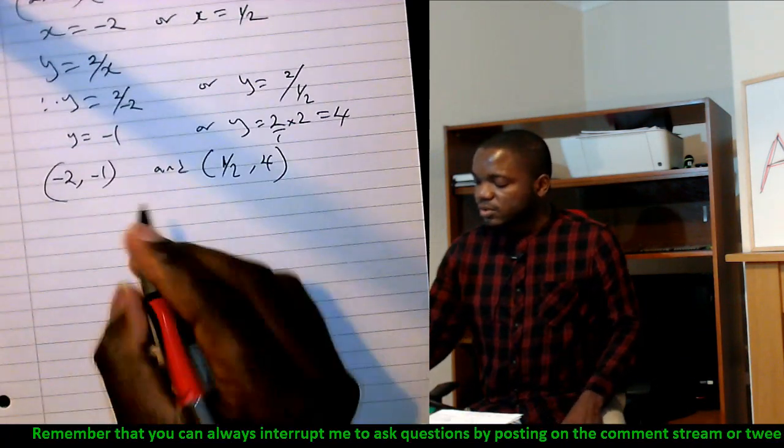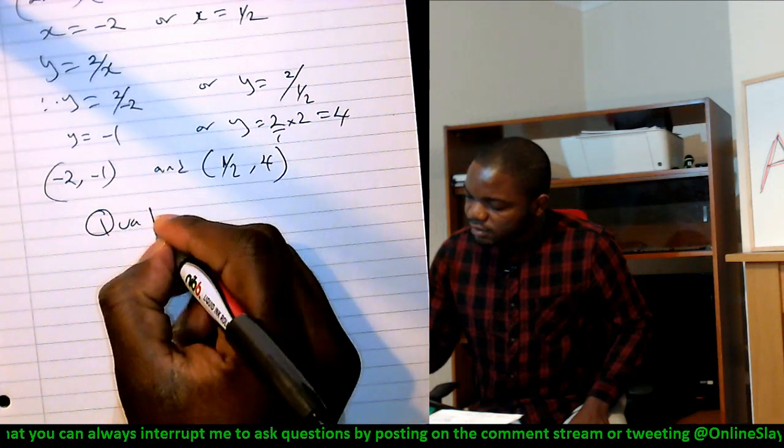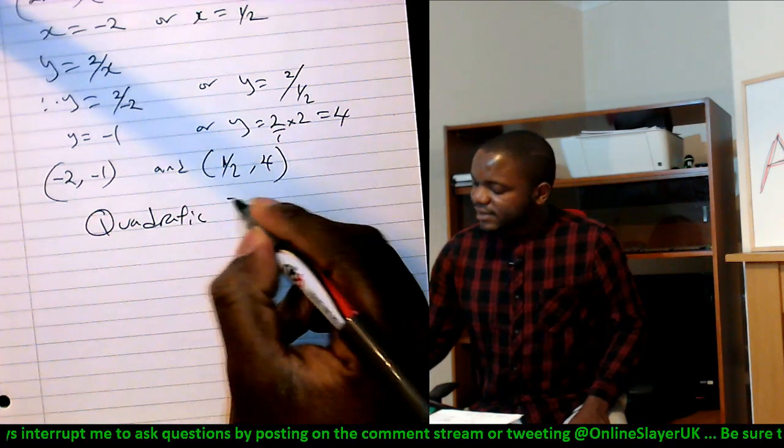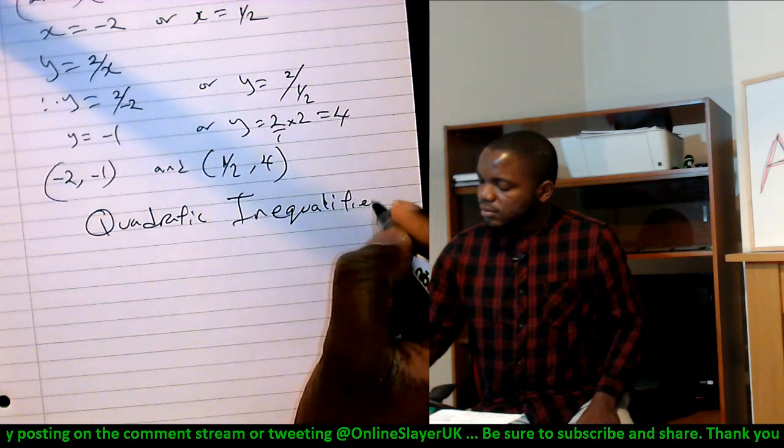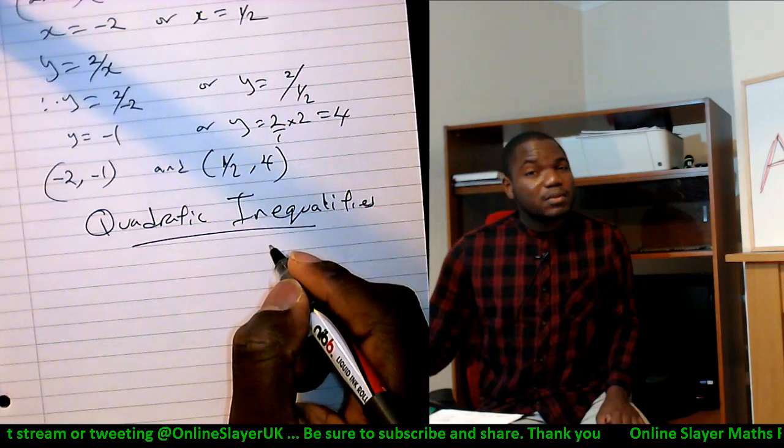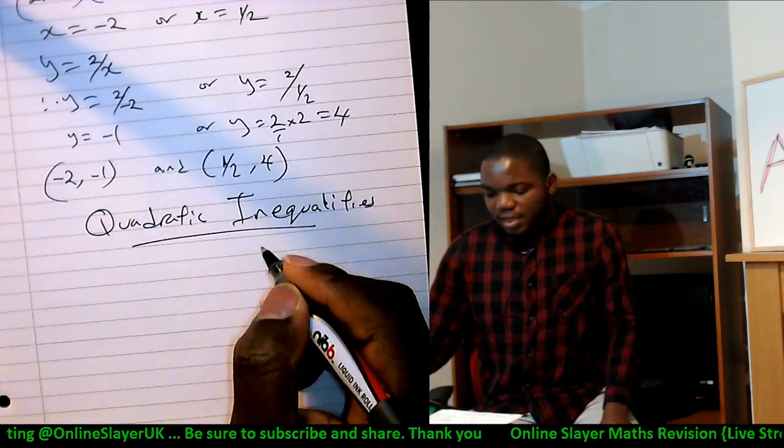Finally, we shall look at quadratic inequalities, which is like the simplest thing you'll ever be asked. Do you know why it's simple? Because it's the number line.